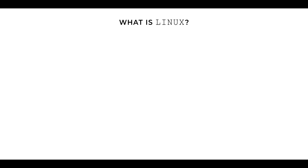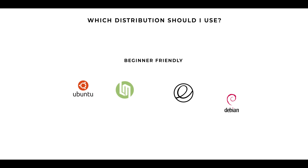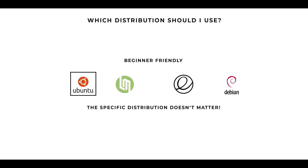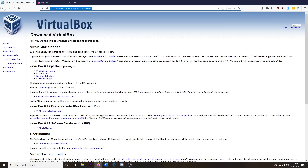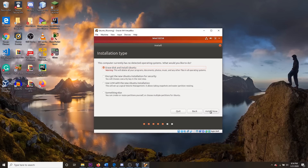In this crash course, we will be doing a basic introduction to Linux — what it is — and because this is specifically geared towards cybersecurity, we will be naming some cybersecurity use cases, including the Linux distributions we will be using. We'll cover when it comes to choosing a beginner-friendly distribution, the ones I recommend, then move on to installing VirtualBox, installing Ubuntu, mounting Ubuntu to the new VM, and configuring Ubuntu.